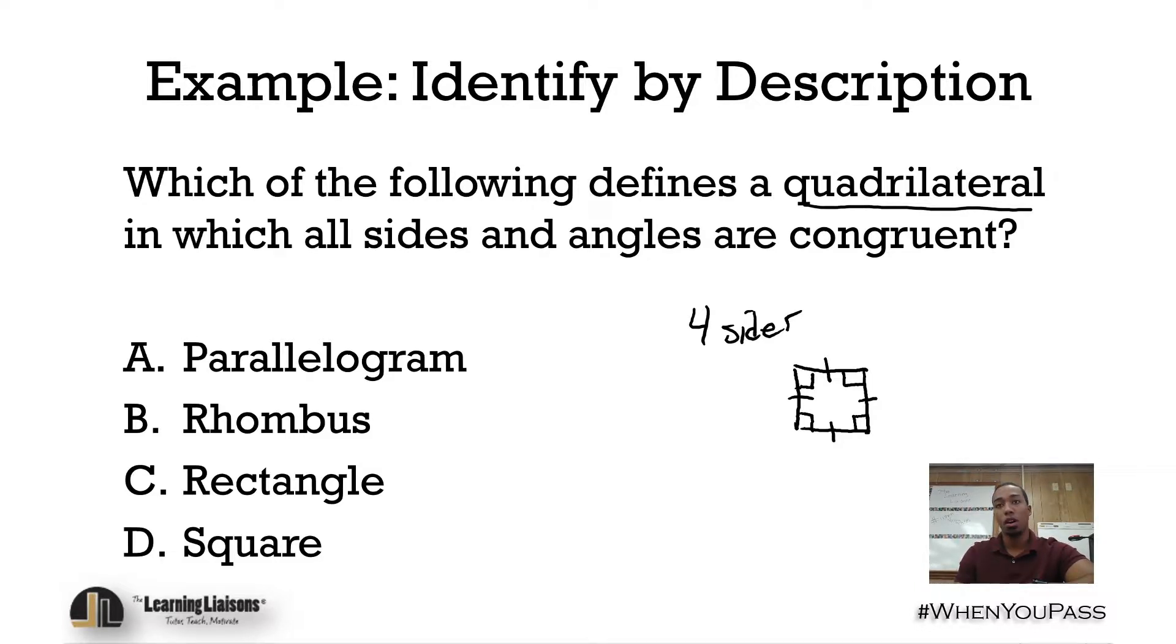Remember, a parallelogram—we would have different angles in a parallelogram. A rhombus, all the sides are equal only, and a rectangle, all the angles are equal only. Square—this is the perfect definition, this is the specific definition.